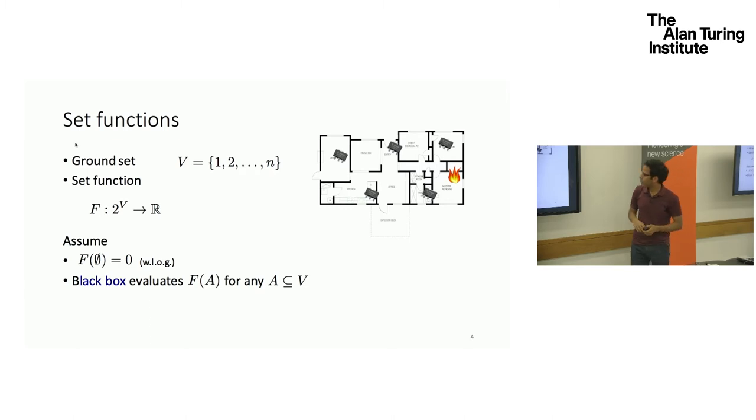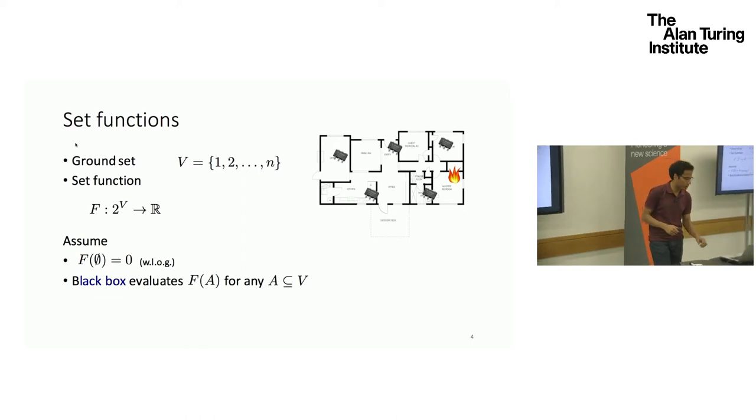So if the function value is large, it means that this placement is very good. But if the function value is small, then we don't want that placement. Oftentimes, you assume in these problems that if you have a null set, meaning that you have placed no sensor at all, then there's zero utility. And we also assume going forward that we have a black box oracle which given a set, tells you what the utility or what the function value is.